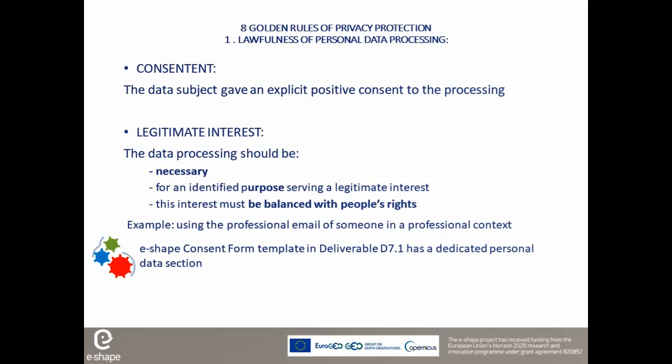Another legal basis can be your legitimate interest, but strict conditions apply. The data processing should be necessary for an identified purpose serving a legitimate interest, and this interest must be balanced with people's rights. For example, using the professional email of someone in a professional context can be based on legitimate interest. But using the personal email of someone in a professional context can be analyzed as an evasion of privacy, and you cannot base your processing on legitimate interest in that case. The e-shape consent form template in deliverable D7.1 has a dedicated personal data section.